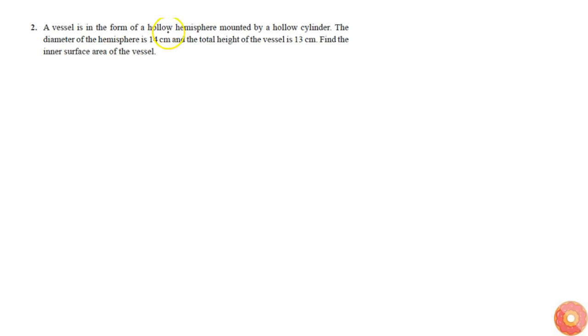A vessel is in the form of a hollow hemisphere mounted on a hollow cylinder. The diameter of the hemisphere is 14 cm and the height of the vessel is 13 cm. We are asked to find the inner surface area of the vessel.